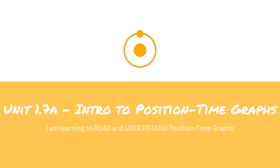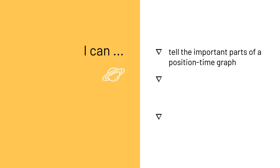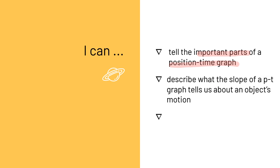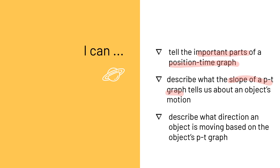This is the video lesson for unit 1.7a, Introduction to Position Time Graphs. The learning intention for this lesson is: I am learning to read and understand position time graphs. The success criteria are: I can tell the important parts of a position time graph, I can describe what the slope of a PT graph tells us about an object's motion, and I can describe what direction an object is moving based on the object's PT graph.